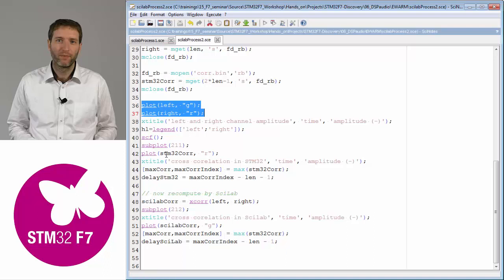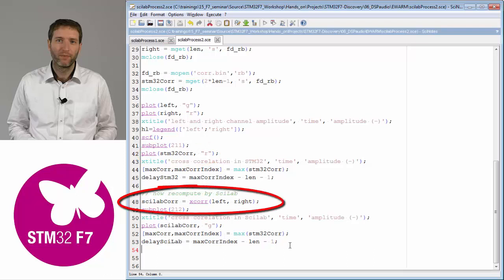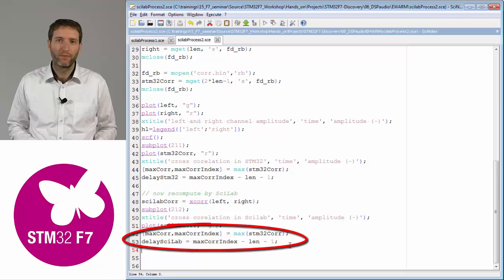We kept the same—we plotted the left and right signals. Then I also plot the STM correlation, which is loaded from the hex file generated by our IDE. Then I compute the correlation by Scilab. Here it's extremely easy: one function, two arguments, I got the result, and I plot it below the previous one. What I do is also compute the delay, which in Scilab is very easy. I just call function max and it will give me the index of the maximum.